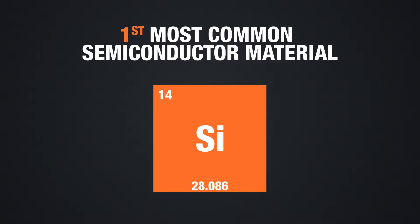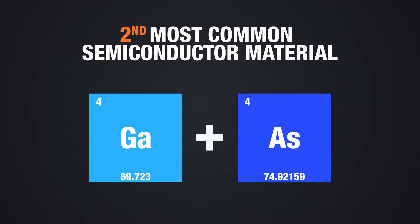The most commonly used semiconductor material in the electronics industry is silicon. After that, it's a compound known as gallium arsenide.